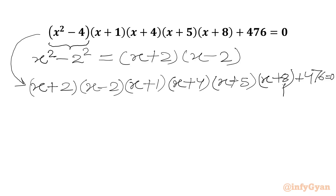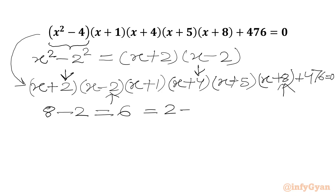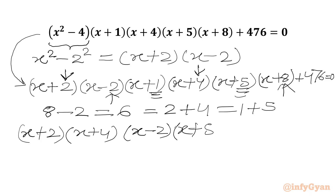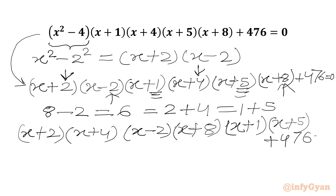Now if I add 8 and -2, I get 6. If I add 2 and 4, I get the same result, 6. And if we add 1 and 5, we get 6 again. So let us rewrite all the brackets by pairing them: (x + 2)(x + 4), then (x - 2)(x + 8), and (x + 1)(x + 5), plus 476 = 0.